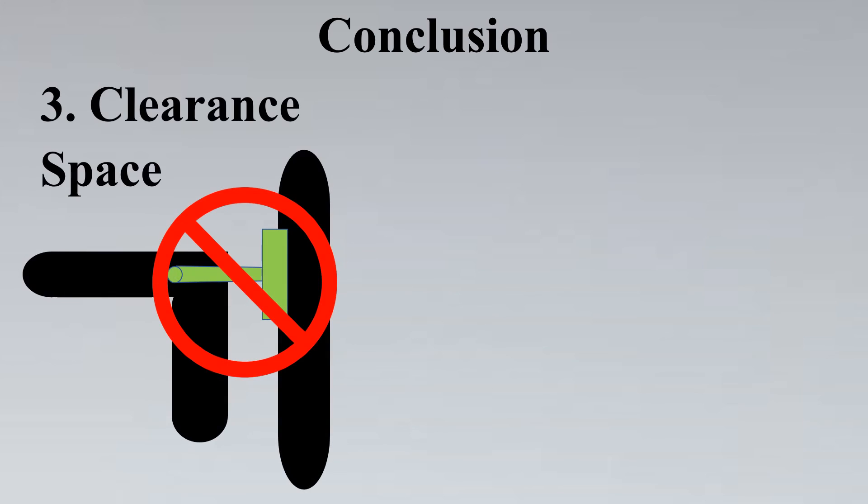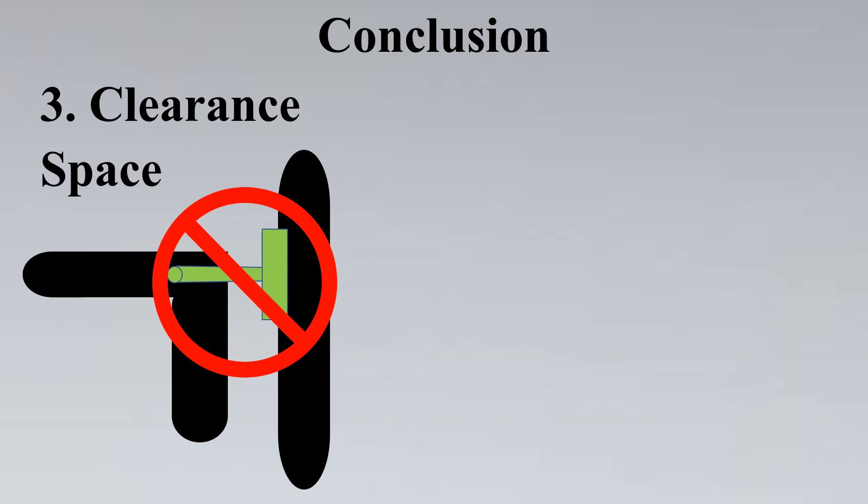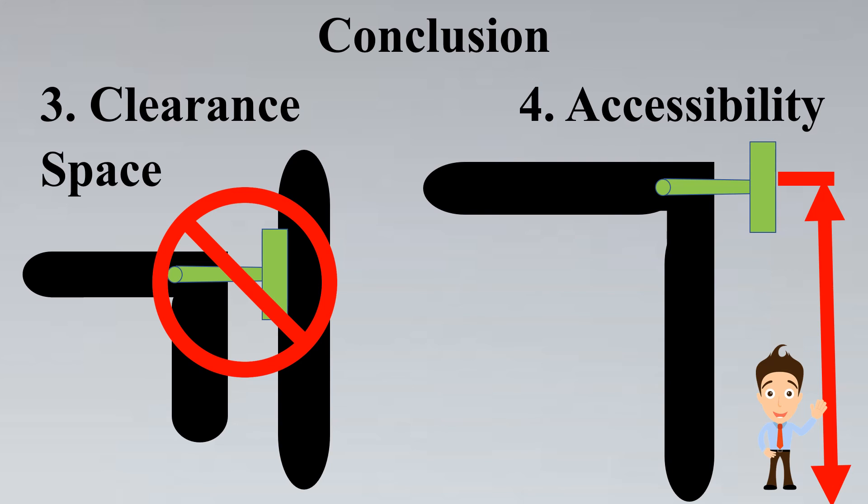The third criteria which we saw was the clearance space. We need to see that the space should be sufficient enough for the thermowell to be removed out of the process. We saw about API RP standard which says the clearance space should be the length of the thermowell plus 3 inches extra to it. Now the final criteria was the accessibility part of it. So we had seen that if a person needs to access it frequently then we need to take special permissions from the client or from the operations team that will such installations be feasible to them and how frequently they want to access the thermowell.